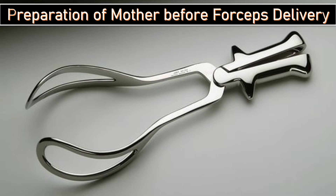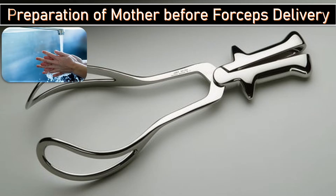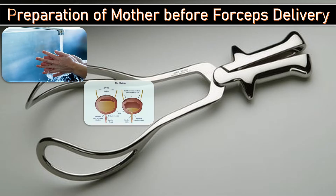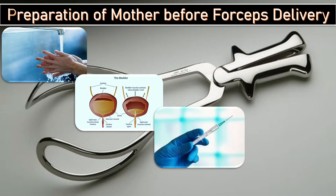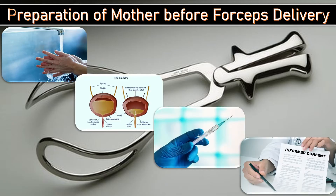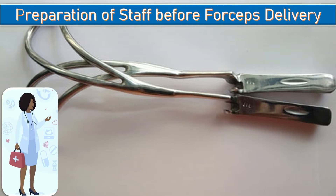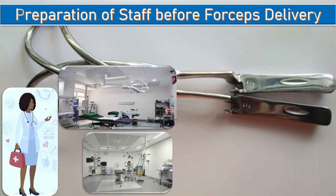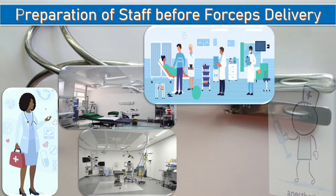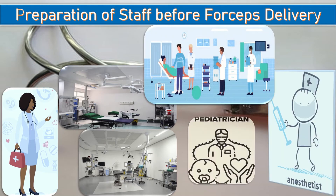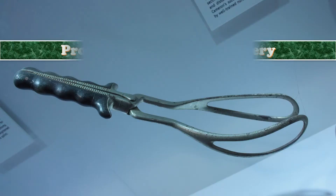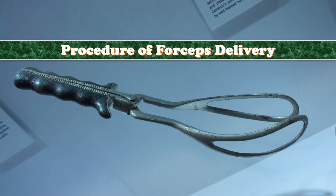Here we have different types of forceps like Simpson's, Kielland, and Piper. To prepare before forceps delivery: maintain aseptic technique, ensure the bladder is empty, have adequate anesthesia, and obtain informed written consent. For staff preparation, there must be an experienced operator, adequate facilities, the theater must be available, and a senior anesthetist and pediatrician must be present.